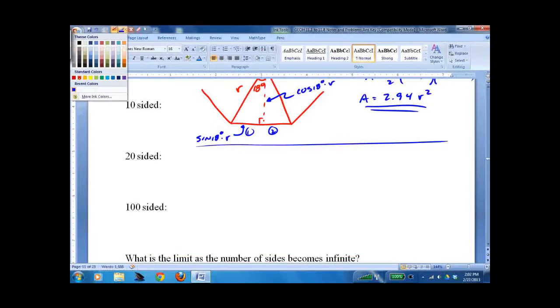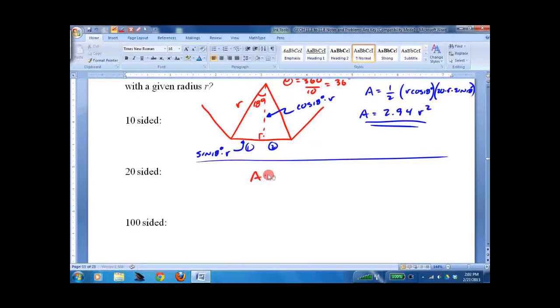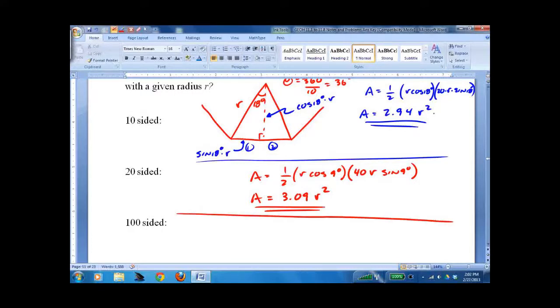We do it for a 20-sided shape. And you think about this formula we finished off with. We'd say it's one-half r in 20-sided shape. That theta becomes half as much, because 10 to 20 is twice as much. So you get cosine of 9 degrees. Now you have 40 r sine of 9 degrees. If you blast all that out, you get 3.09 r squared. This is what calculus would call limit. We start with 2.94, go to 3.09, and we keep going.